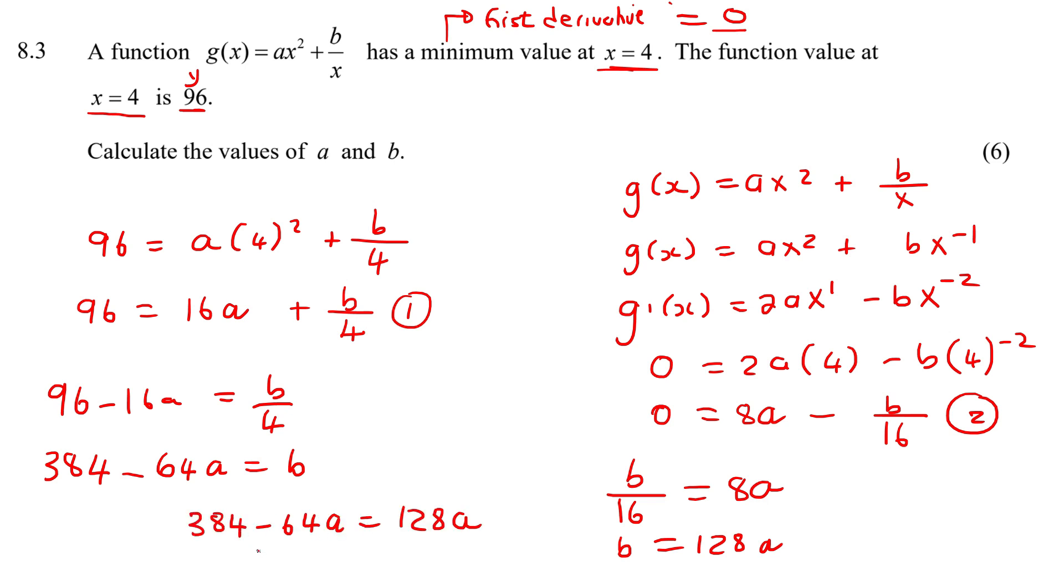I'm then gonna take the 64 over, where it'll become 192a. And then if you divide both sides by 192, you would find out, therefore, that a is 2. And then to get b, you could just plug it into this expression over here, or over here, wherever you like. So b would then be 128 multiplied by 2. And so that would be 256.